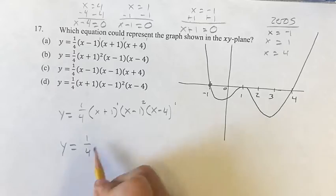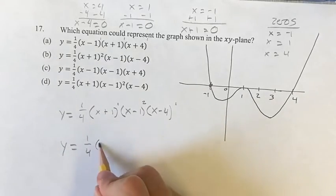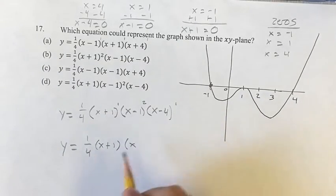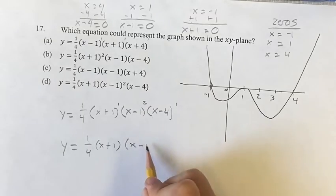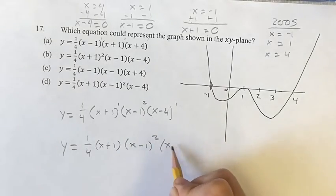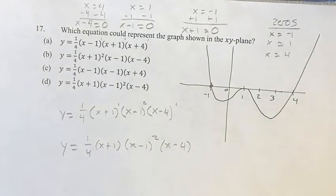And then, if we get rid of the 1s, because x plus 1 to the 1 is just x plus 1, we're left with 1/4 times x plus 1 times x minus 1 squared times x minus 4, and this corresponds with D. So that's going to be our final answer.